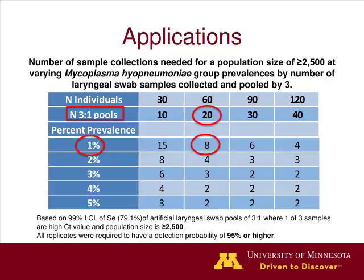All scenarios were compiled into sampling guideline tables. For a population of 2,500 or greater, at 1–5% prevalence, pooling by three, with a 95% detection probability, if you want to detect 1% prevalence and sample 90 individuals pooled by three, you run 30 PCRs and collect that group eight different times. As you increase the number of animals sampled, the number of collection time points decreases.